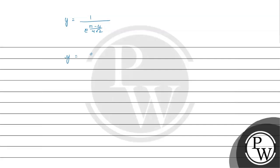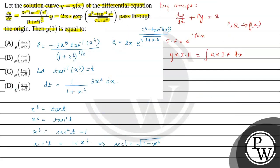Therefore y equals e^(−(π−4)/(4√2)), which equals e^((4−π)/(4√2)). Hence the final answer is y(1) = e^((4−π)/(4√2)). Checking the options, we can say that option A is correct. Hope you understood the solution. Thank you bachon.